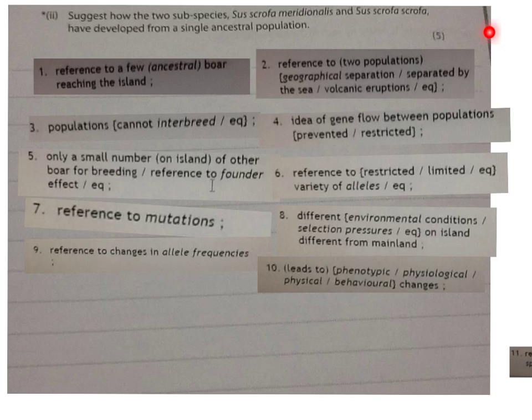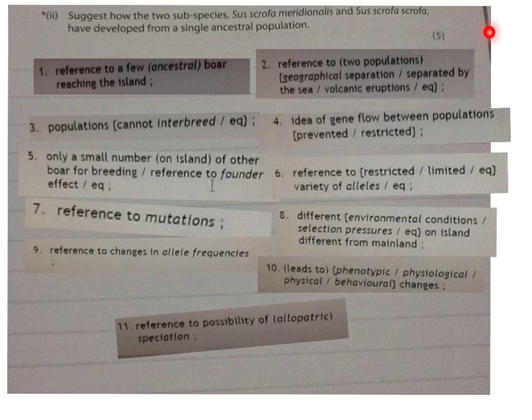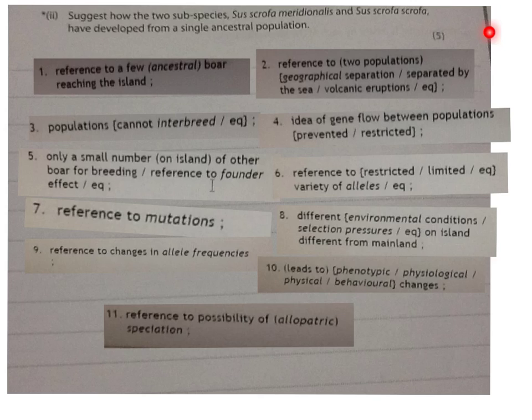The ninth mark can be obtained by mentioning changes in allele frequencies — different environmental selection pressures will lead species in different areas to have different allele frequencies of particular alleles. The tenth mark is obtained by saying this in turn leads to phenotypic, physiological, physical, or behavioral changes. For the eleventh and final mark, give reference to the possibility of allopatric speciation.